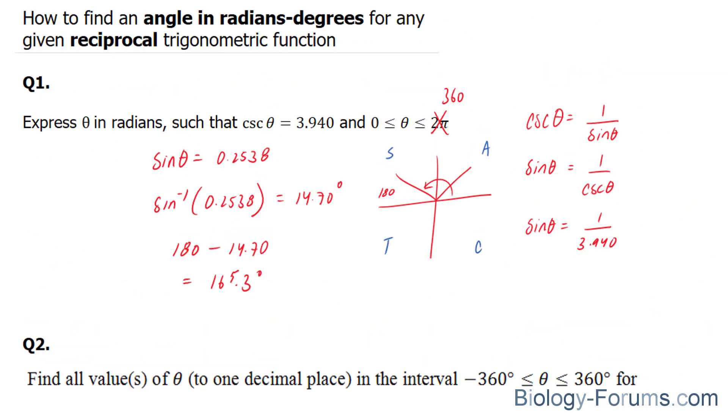That is how to find any angle in radians and degrees for any given reciprocal trigonometric function. If you found this tutorial helpful, please support our channel by subscribing or by liking this video.